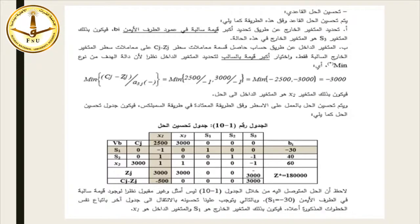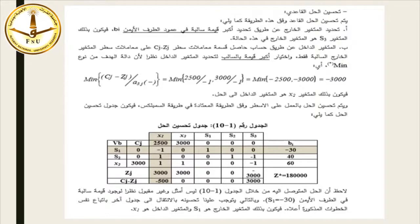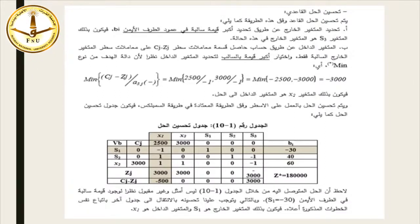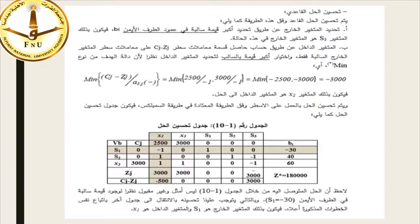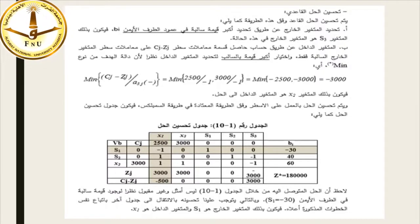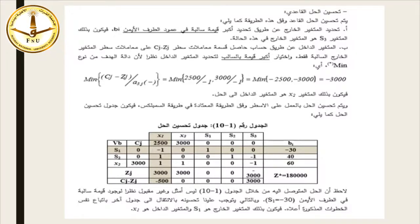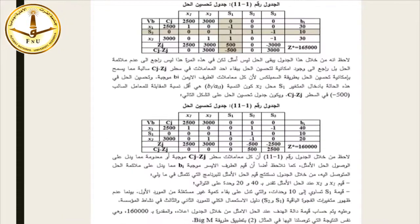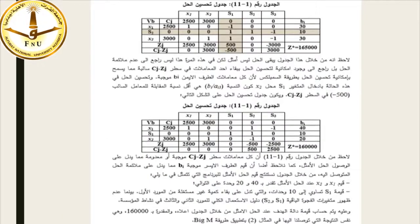يتم تحسين الحل بالعمل على الأسطر بالطريقة المعتادة في السيمبليكس. نلاحظ من خلال الجدول (1-10) أن الحل المتوصل إليه ليس أمثل وغير مقبول نظراً لوجود قيم سالبة في الطرف الأيمن حيث S=-30، وبالتالي يتوجب تحسينه بالانتقال إلى جدول آخر. فيكون المتغير الخارج هو S1 والمتغير الداخل هو X1 في الجدول (1-11).